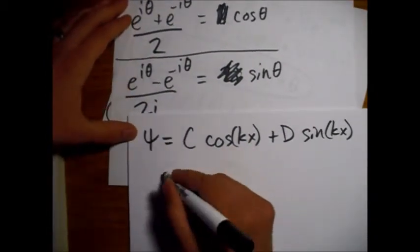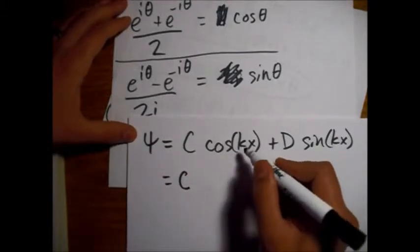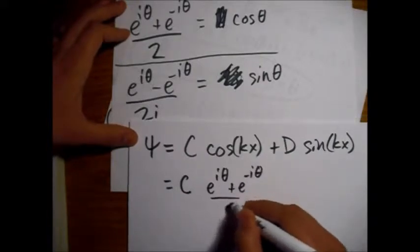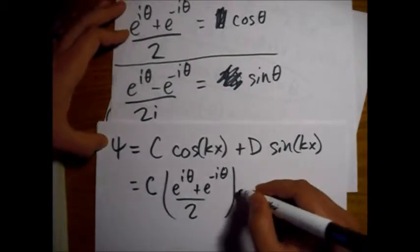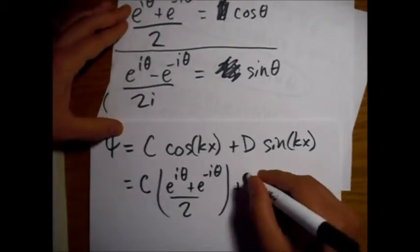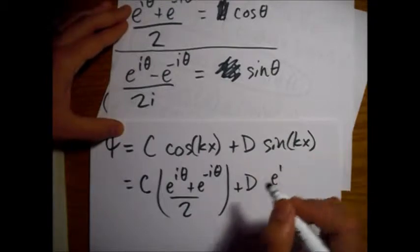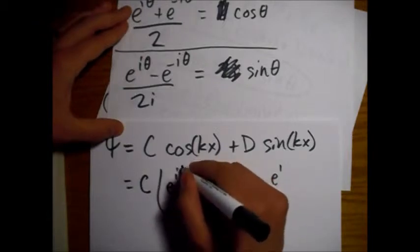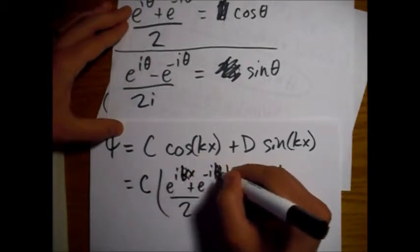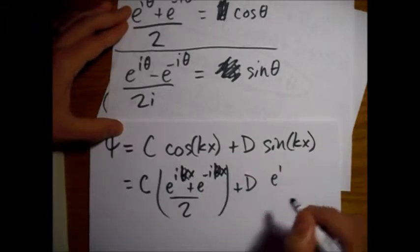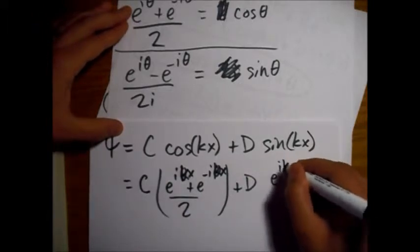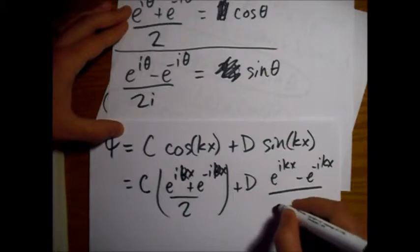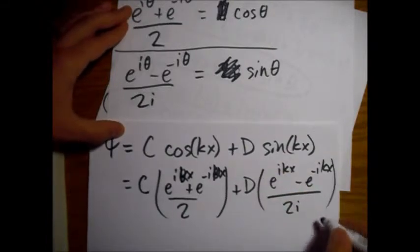Like this. And now we'll go ahead and put these two in terms of the complex exponentials from these equations up here. So, we have C times e to the iθ plus e to the minus iθ over two, plus D. In this case, theta is equal to kx. I should not have copied so quickly. So it's e to the ikx minus e to the minus ikx over 2i.